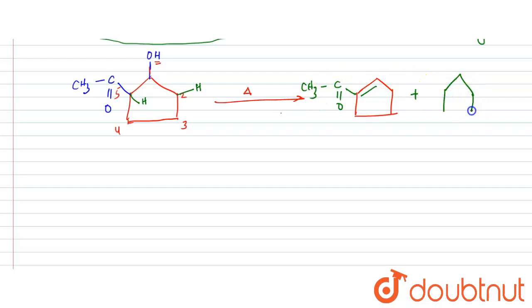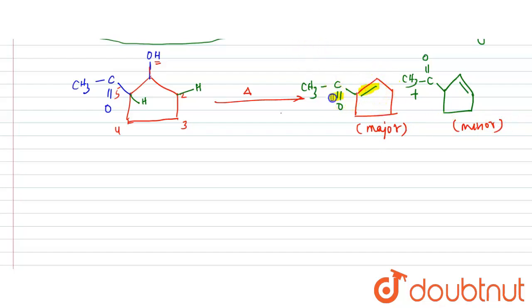So you can have two compounds: one with the double bond conjugated with the ketone carbonyl (C=C–C=O–CH3), which is the major product, and another with the double bond at a different position, which is the minor product. The major product is more stable because its double bond is stabilized by resonance with the carbonyl oxygen of the ketone group. This resonance stability makes it the major product.